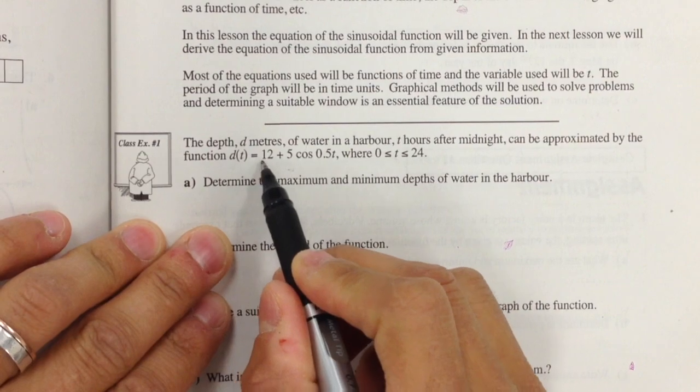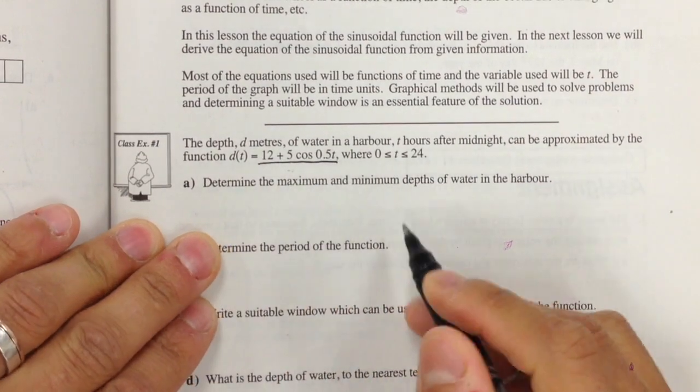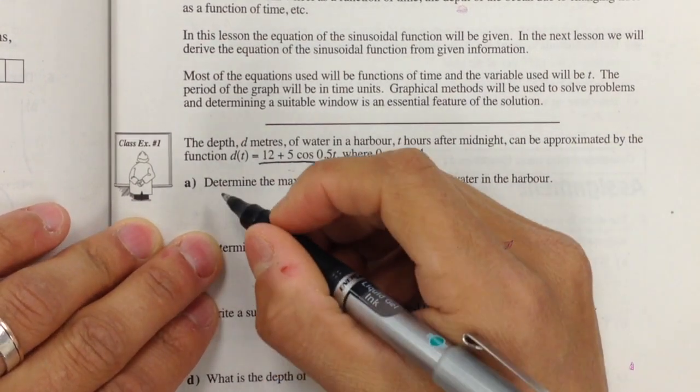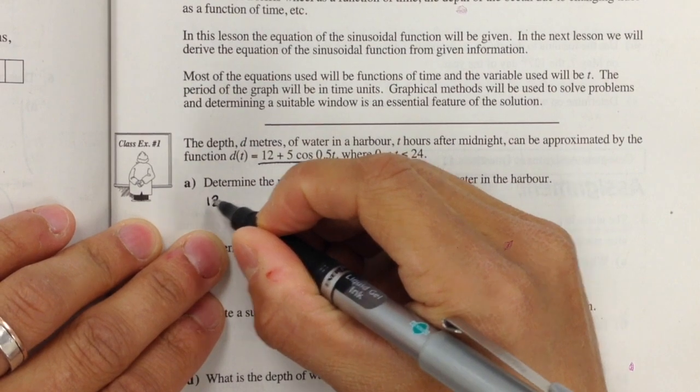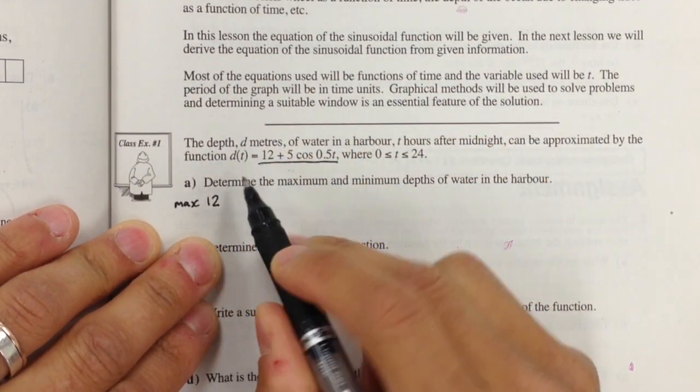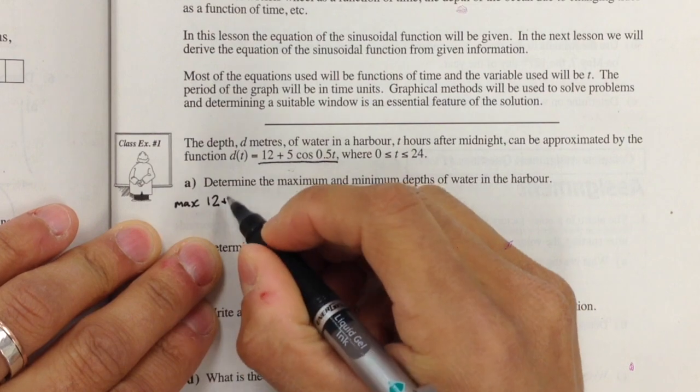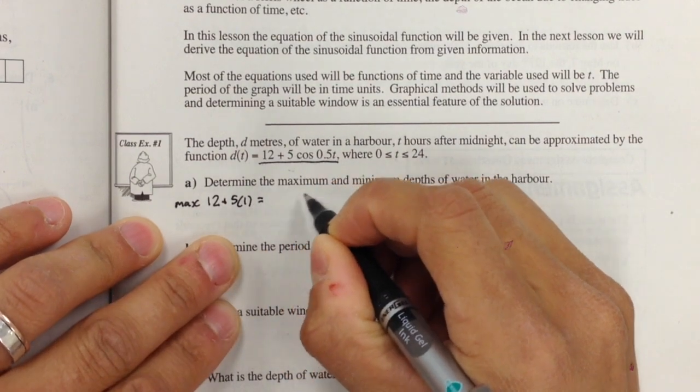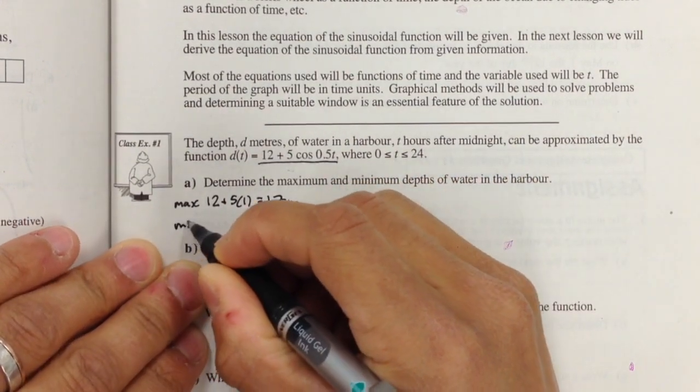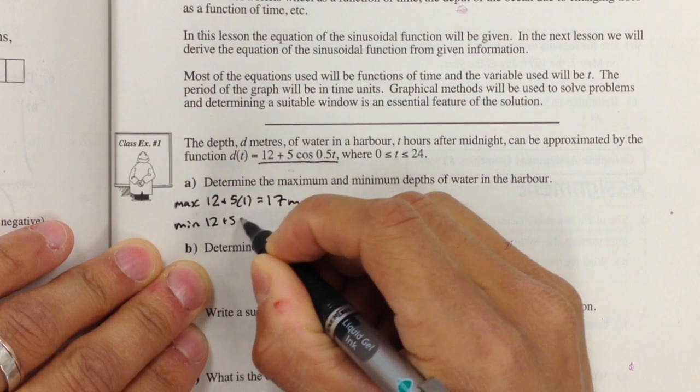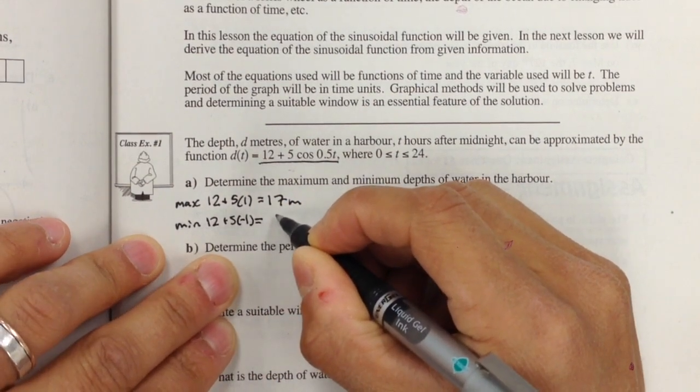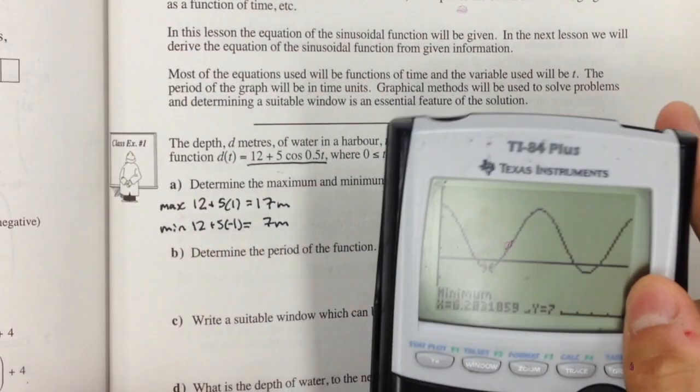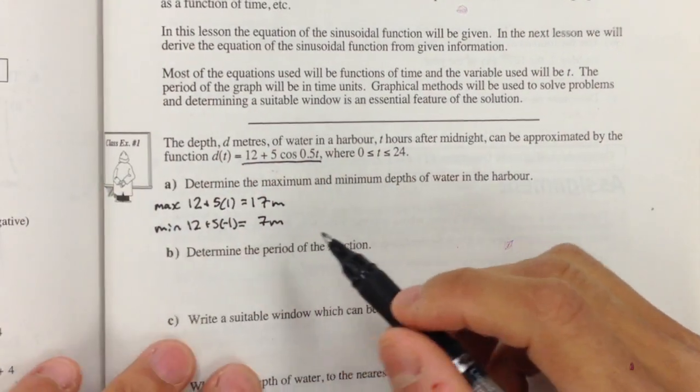The first thing we want to do is, given this function, determine the maximum and minimum points. If we're looking at the max and min, then the max point is 12 plus 5 times 1, which equals 17 meters, and the min is 12 plus 5 times -1, which equals 7 meters. We can also determine this by graphing the function, but we'll do that after.